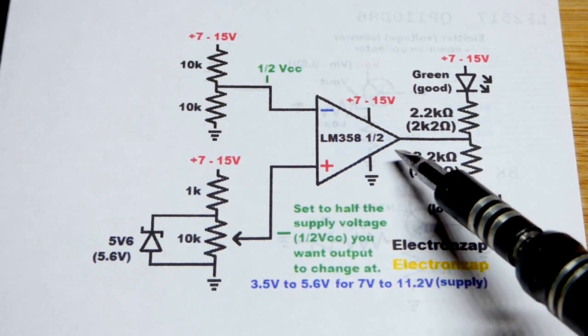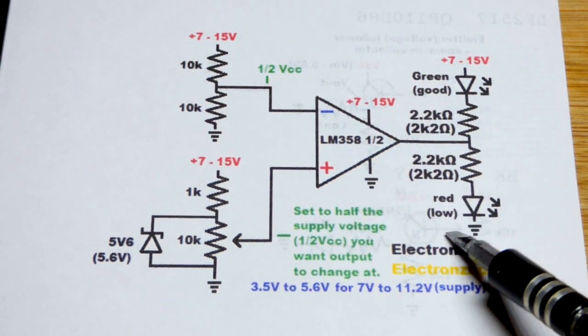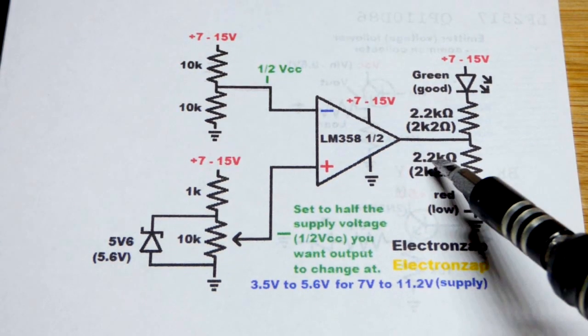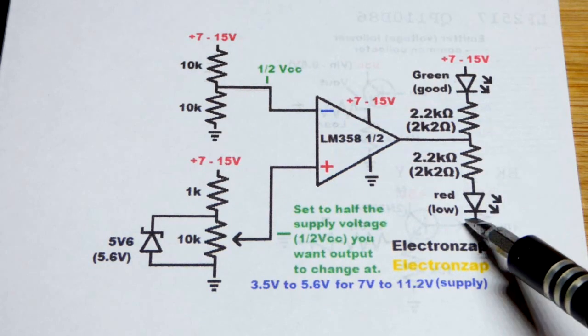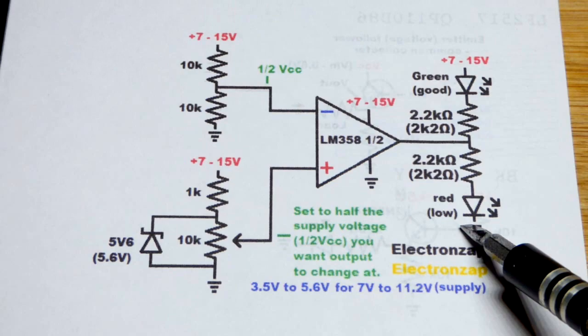If the voltage falls below that point that we set, then the red LED is going to light up. Again we're going to use a 2.2 kilo ohm resistor to protect it because we're dealing with relatively high voltages in this video.